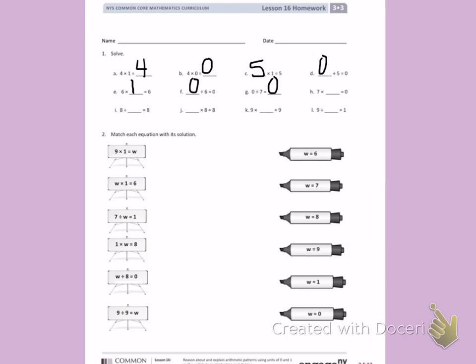H, 7 times blank equals 0. Anything times 0 equals 0. I, 8 divided by 1 equals 8. Anything divided by 1 equals itself. Blank times 8 equals 8. Anything times 1 equals itself.